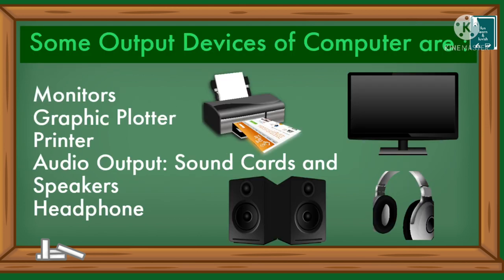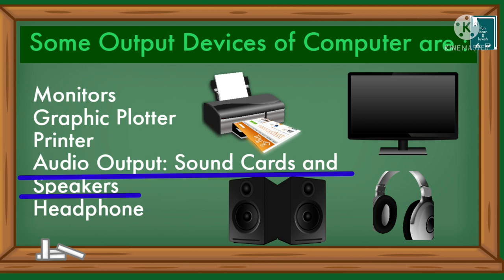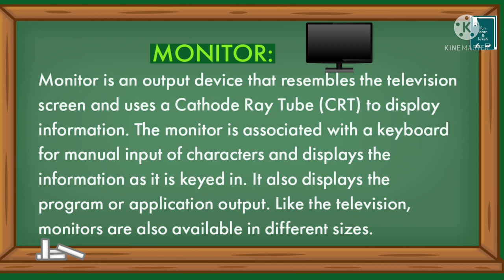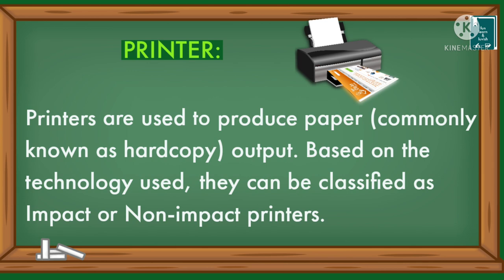Some output devices of a computer are: monitors, graphic plotter, printer, audio output, sound cards and speakers, and headphones. A monitor is an output device that resembles a television screen and uses a cathode ray tube to display information. The monitor is associated with a keyboard for manual input of characters and displays the information as it is keyed in. It also displays program or application output, and like televisions, monitors are available in different sizes.